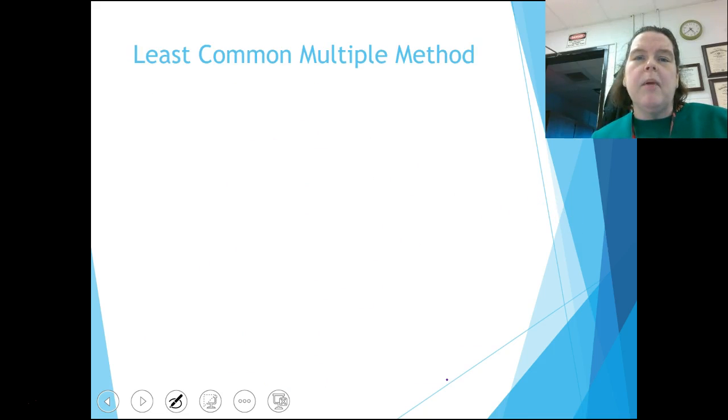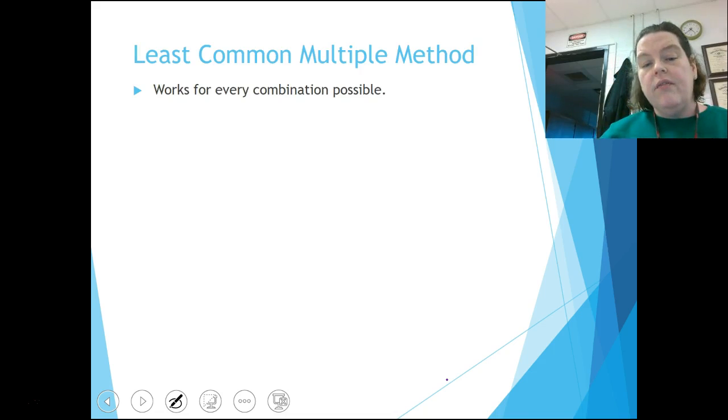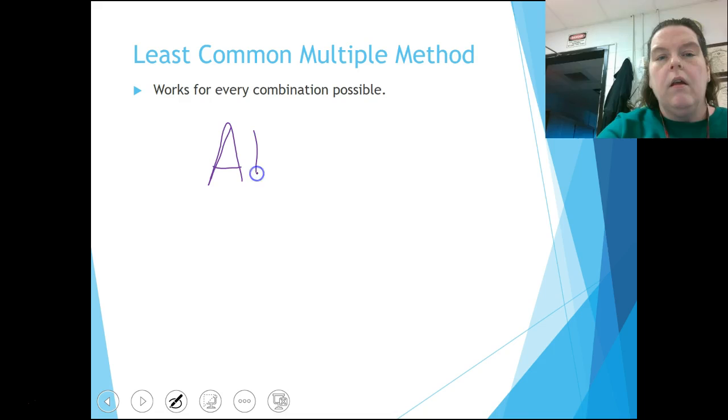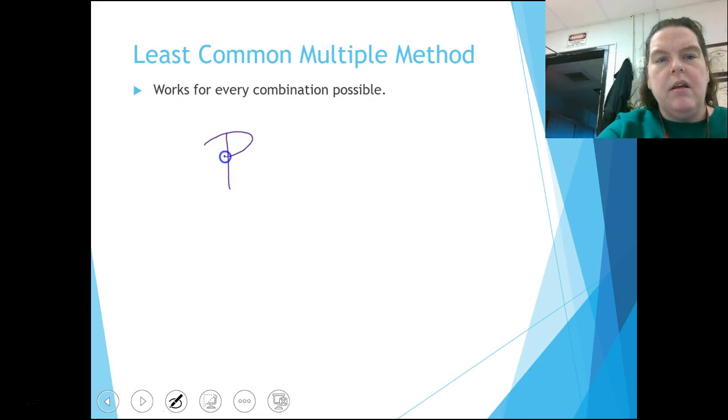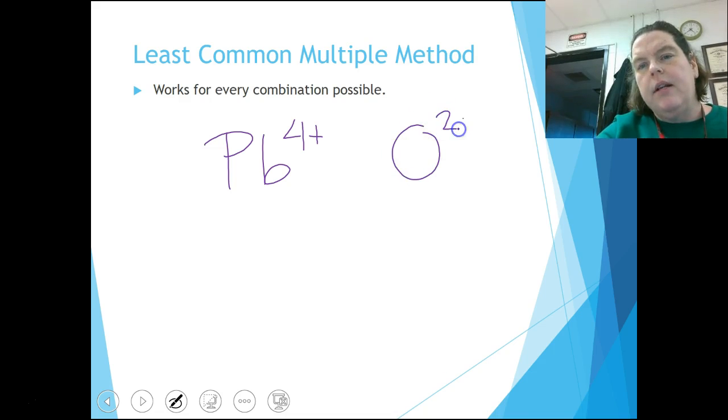So least common multiple method. Least common multiple method also works for every single combination, because what you're doing is you're trying to find the least common multiple of things. So let's talk about Pb4+ and O2-.